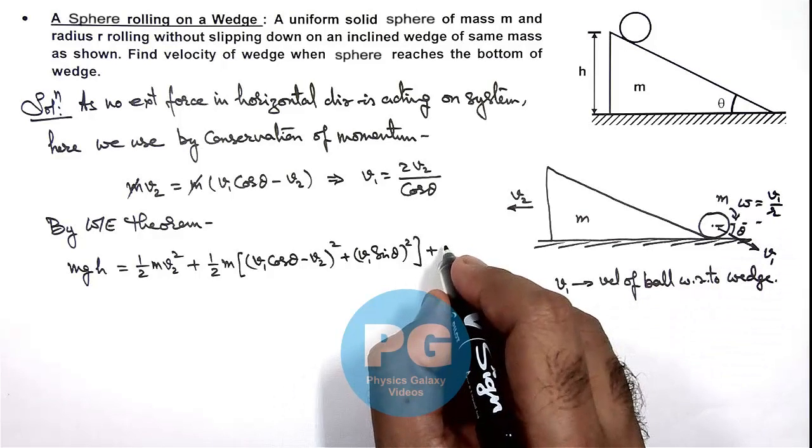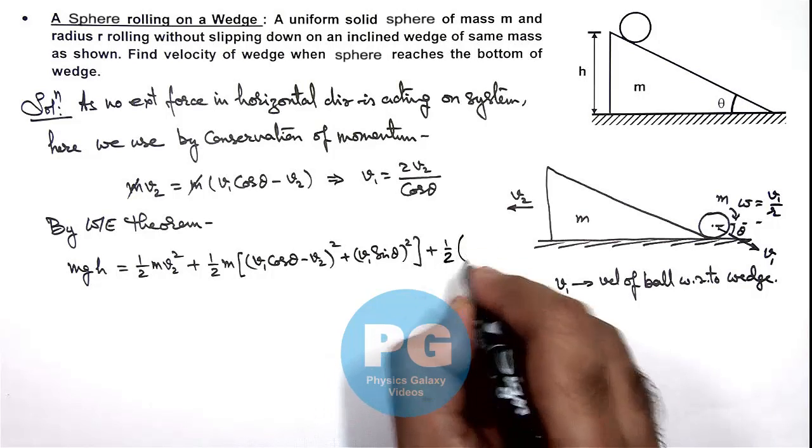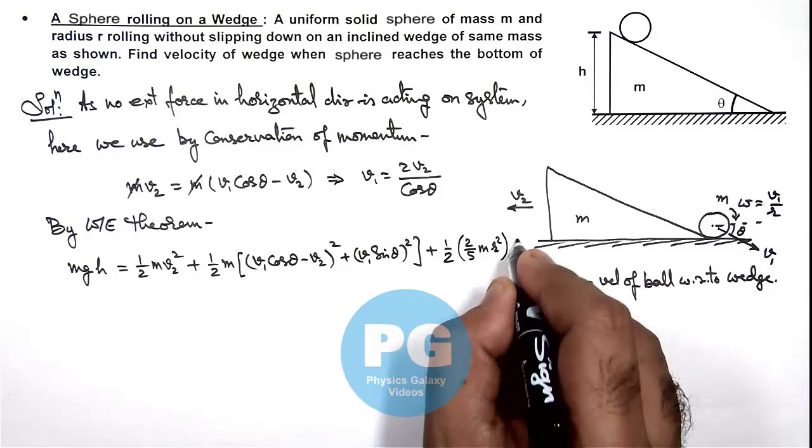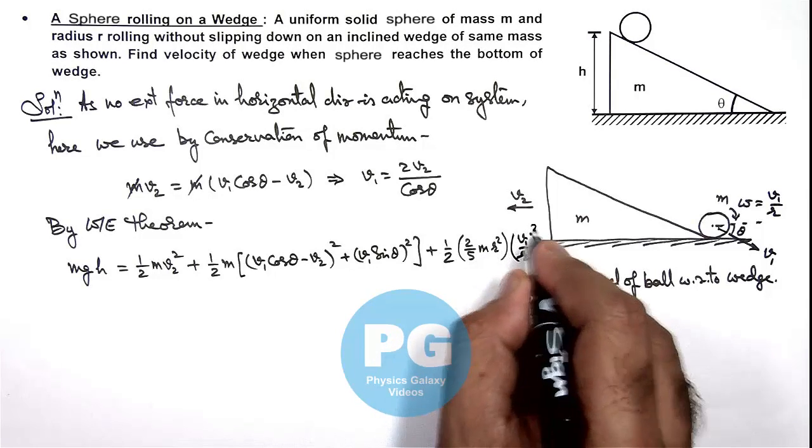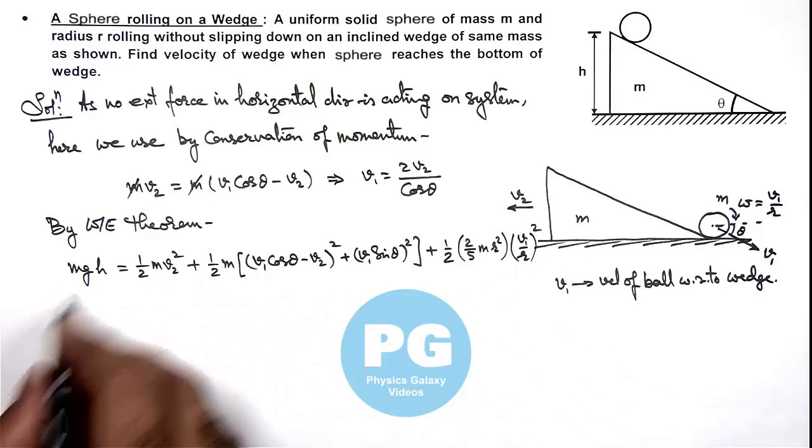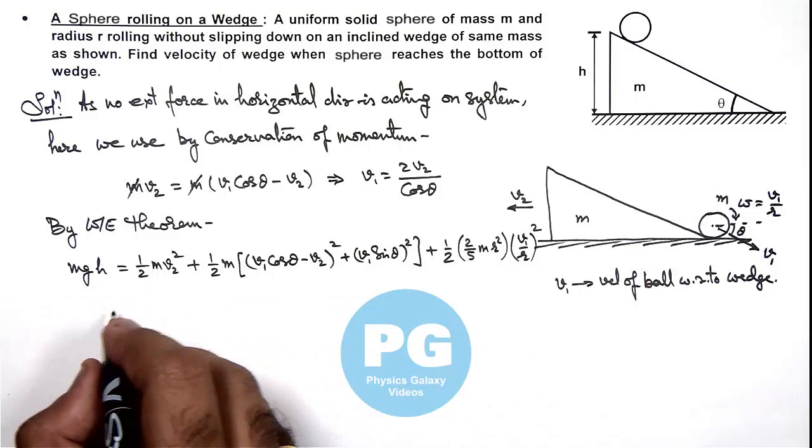So we can write its rotational energy is (1/2)Iω² which is (2/5)mr² multiplied by (v1/r)². Now if we simplify this relation, m gets cancelled out in the whole equation. This gives us 2gh is equal to